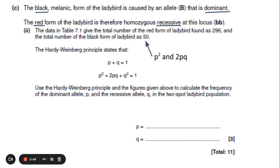So therefore we usually start off with the q squared. We know that q squared is this 296 individuals here that are red, they're the recessive individuals. So I'll do that divided by the total number of ladybirds that I have, the total number is 296 plus 50. So that's where I get the q squared from.